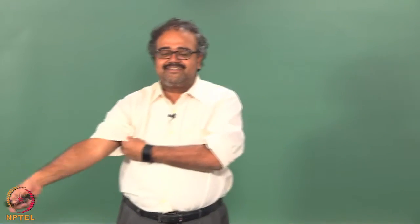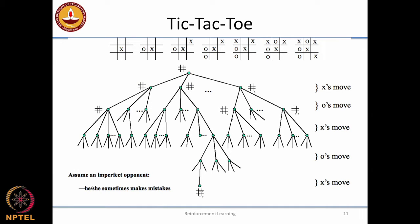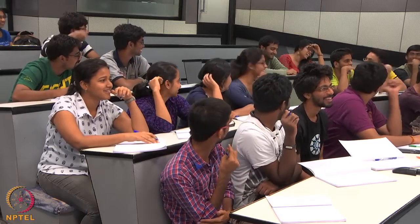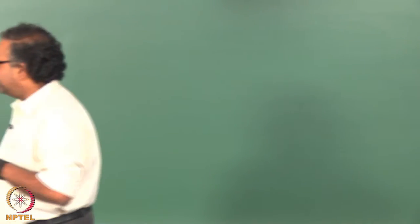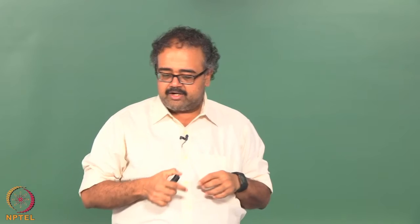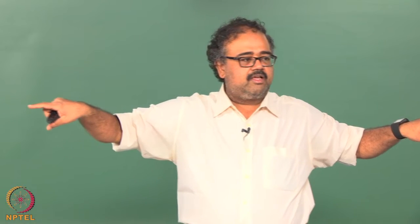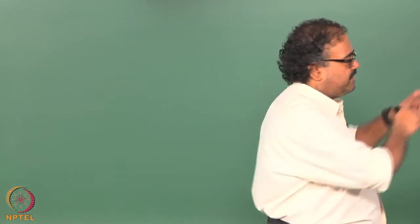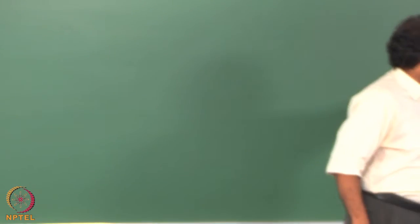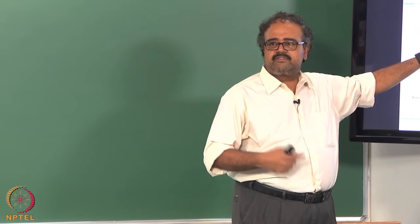Let's look at tic-tac-toe as a reinforcement learning problem. The game tree starts with a blank board — nine possible branches for X's first move, then eight branches, and so on. X is the RL agent and O is the opponent. The state is the configuration of Xs and Os on the board; the actions are the moves made.